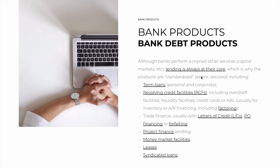Bank debt is usually senior debt, which is secured with some collateral. This is in comparison with other types of debt, such as mezzanine debt or bonds, which are usually junior. So bank debt is senior — it's usually one of the first to be repaid, and it's secured. It's also usually low risk and low reward. A mezzanine loan may charge, for example, 20% interest, while a bank loan may charge 6%.